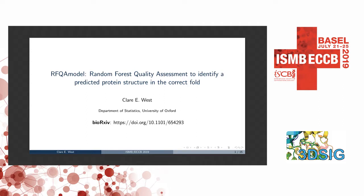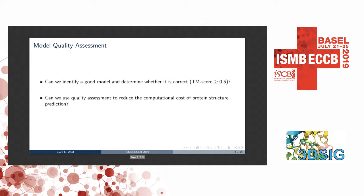The work I'm talking about is also available as a preprint on BioArchive, if you're interested. There are two main questions that we were looking at with this work: firstly, once we've generated many models for our target, can we identify a good model from that set? And can we also identify whether or not it's a useful model? And secondly, can we use this to reduce the computational cost of protein structure prediction?